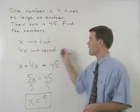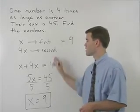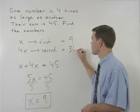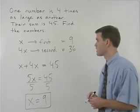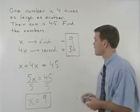So our first number x equals 9 and our second number 4x equals 36. So our answers to this problem are 9 and 36.